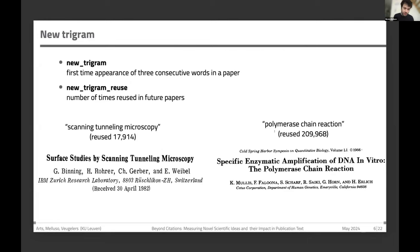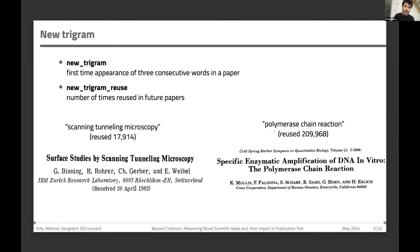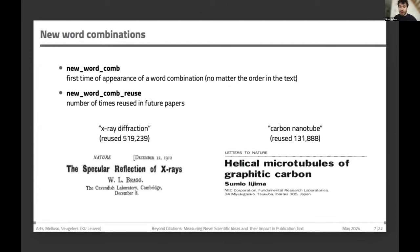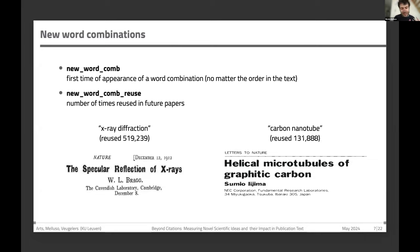We also find new word combinations where the order in the text doesn't matter. We find the first paper introducing 'X-ray diffraction' and the first paper introducing 'carbon nanotube.' The idea is that a combination of words, regardless of order in the text, is able to identify the emergence of new scientific ideas and how many times these ideas are reused.